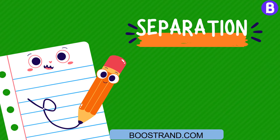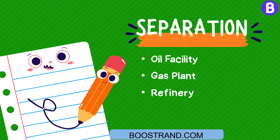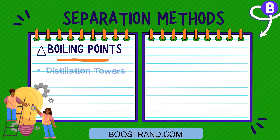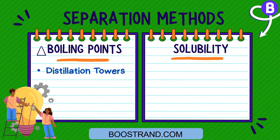Separation is an essential process that is carried out in any plant, whether it was an oil facility, a gas plant, a refinery or a petrochemical. There are many separation methods depending on the fluid physical properties, whether it was the difference in boiling points as in the case of distillation towers, solubility in a specific solvent as in the case of absorbers or extractors, or other separation techniques.